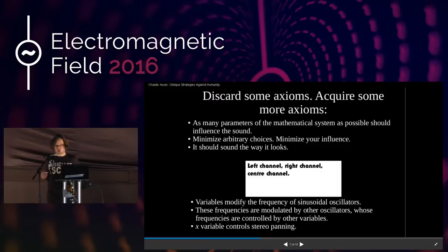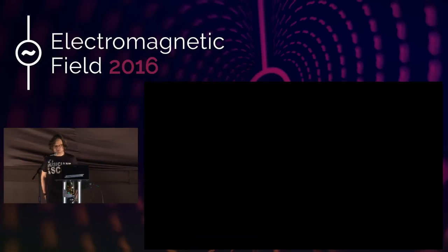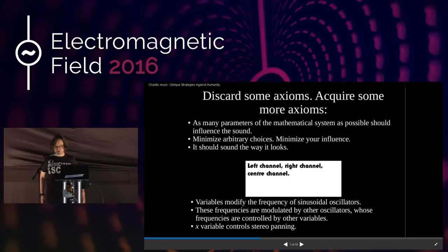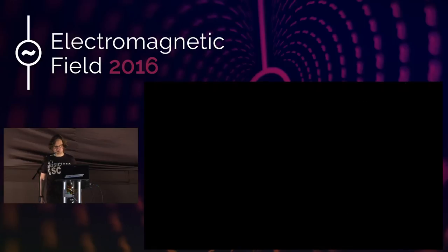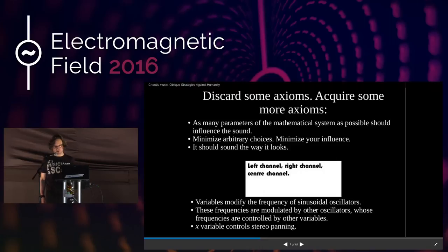Three variables, two sinusoidal oscillators — because we've got two ears. The frequency of those oscillators will be modulated by a choice of two of the variables, and those oscillators will themselves be frequency modulated by other oscillators whose frequency will be controlled by another of the variables. We'll have the x variable doing stereo panning.